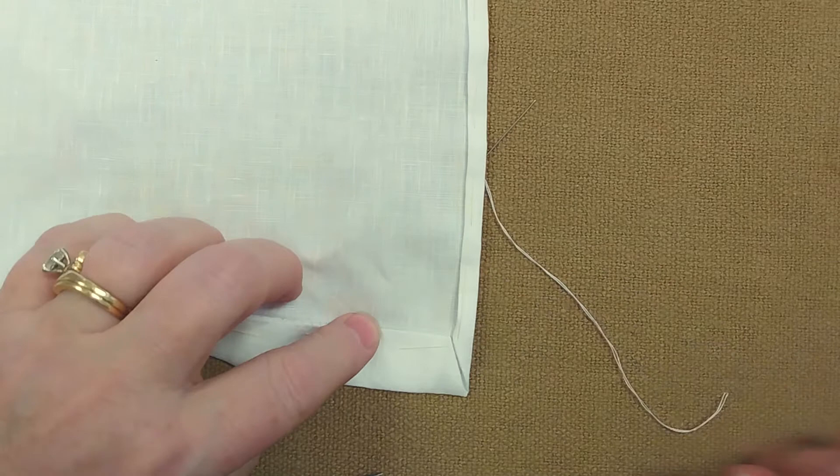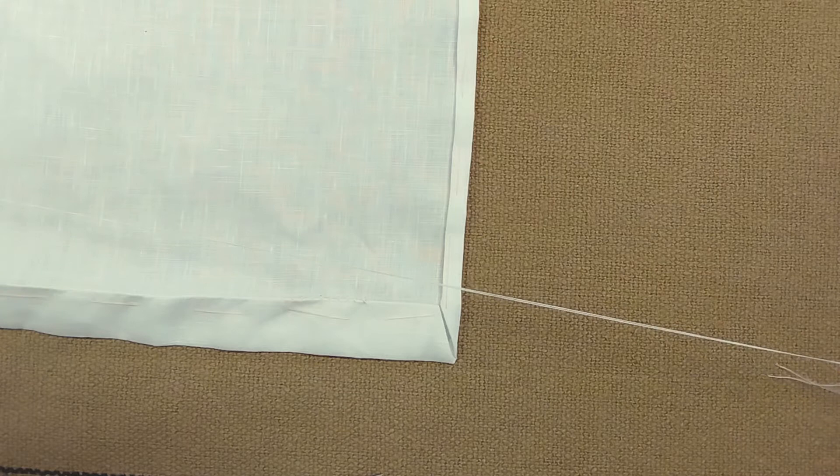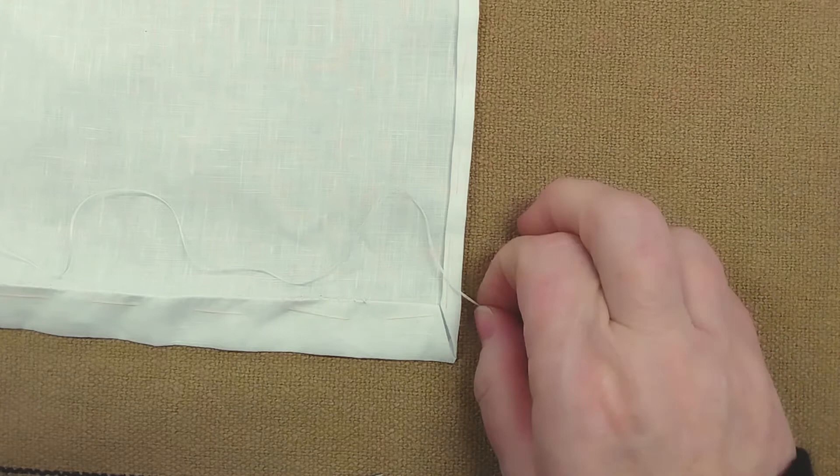And you start the same way. So here we're doing double thread because we spend a lot of time repairing single thread stitching on old purificators, because they get ironed and washed and ironed and washed much more than anything else that shows up on the altar, and it just wears the thread out after a while. So two is good.